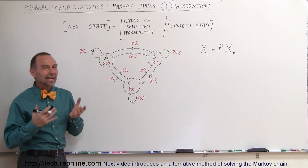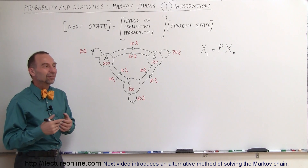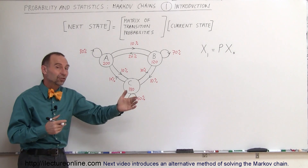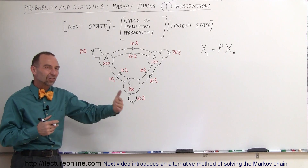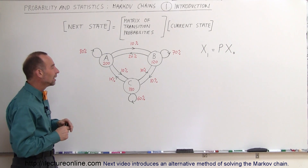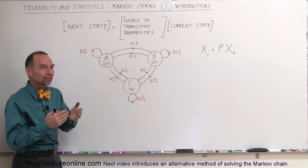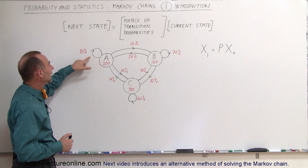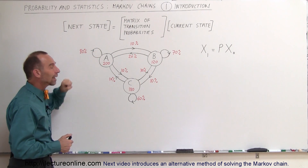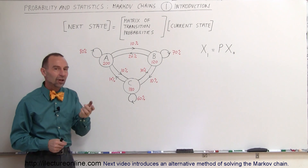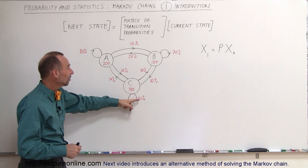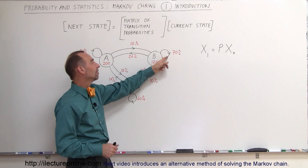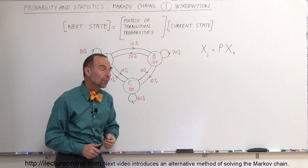What happens, just like in any particular case, people don't typically go to the same store all the time. They may want to go to a different store because they like the sales better the following week. On a predictive scale, 80% of customers from Store A will go back to Store A the following week, 70% from Store B will go back, and 60% from Store C will go back.